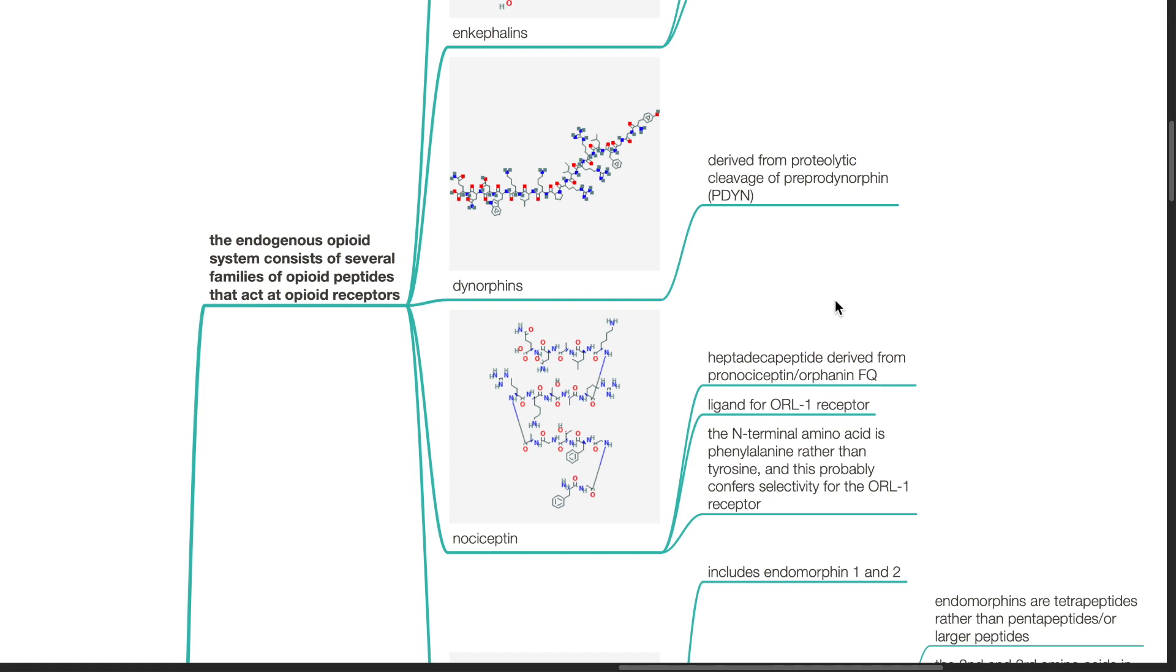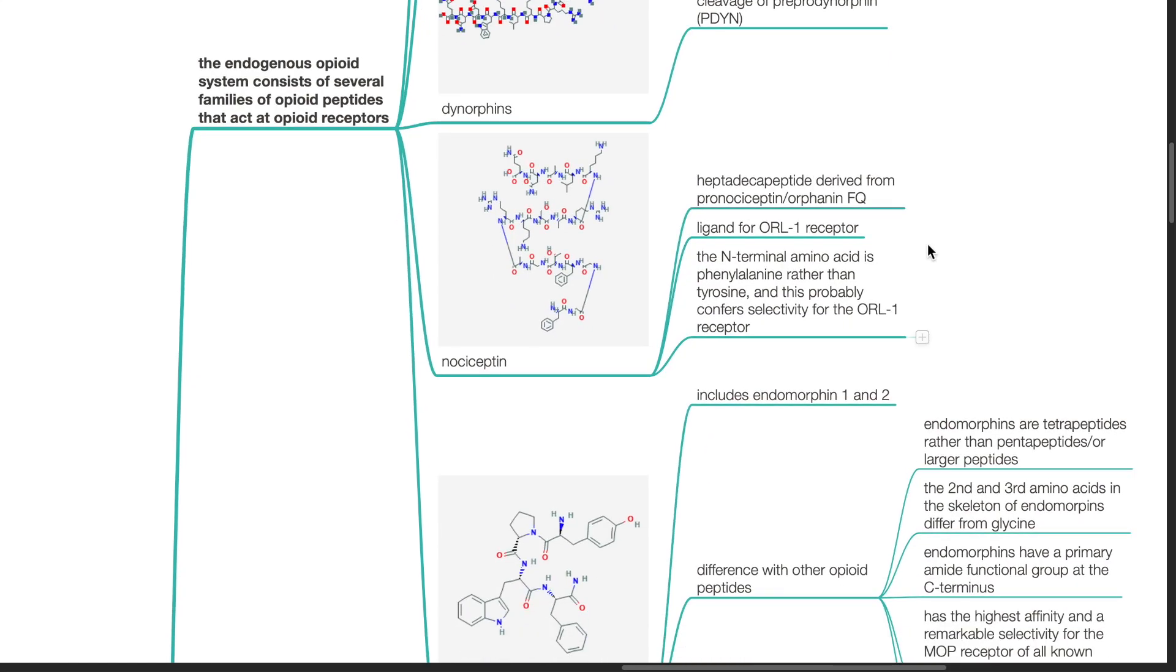Enkephalins are derived from proteolytic cleavage of proenkephalin. It includes leucine and methionine enkephalins. Dynorphins are derived from proteolytic cleavage of preprodynorphin. Nociceptin is derived from pronociceptin or orphanin FQ. It is a ligand for ORL1 receptor.